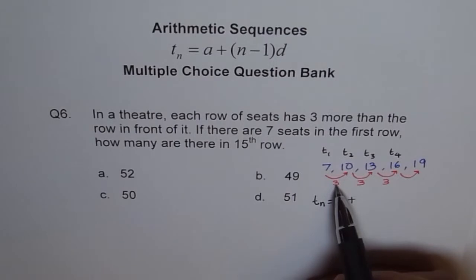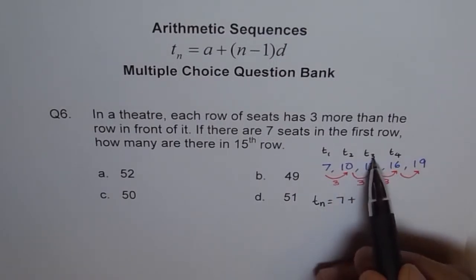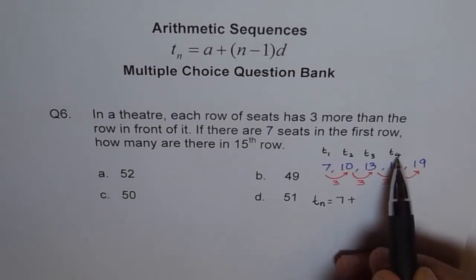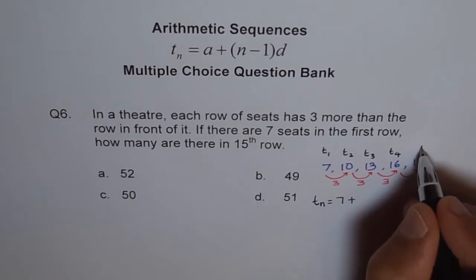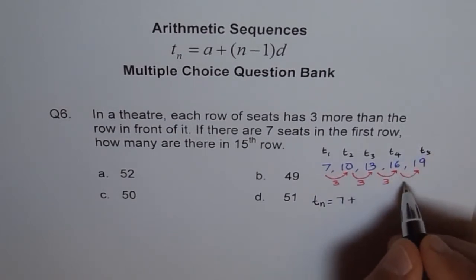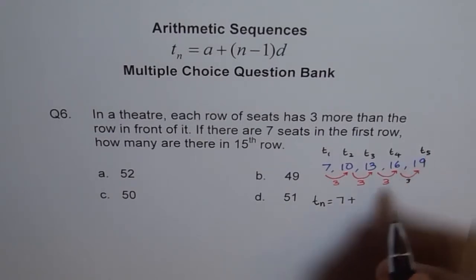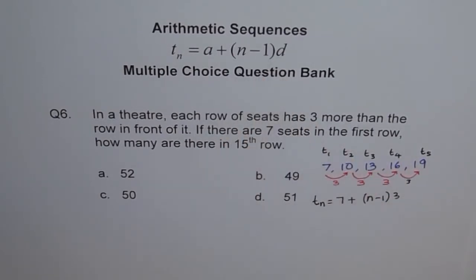In term 2, we added 3 one time. In term 3, we added 3 two times. In term 4, we added 3 three times, 1 less than 4. Do you see that? In term 5, we added 3 one, two, three and one more, 4 times, 1 less than 5. Therefore, it is N minus 1 times 3. The common difference. D is the common difference. That is how you get your general formula.